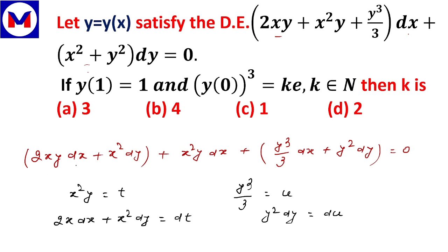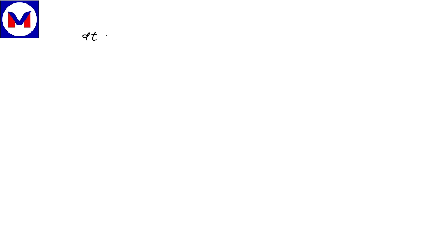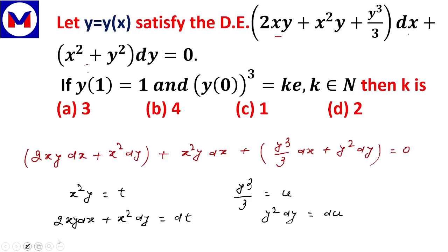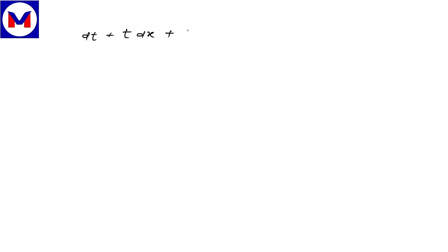Looking at the equation: 2xy·dx + x²·dy becomes dt in terms of our substitution. So the full equation becomes: dt + t·dx + u·dx + du = 0.